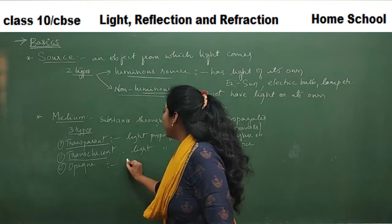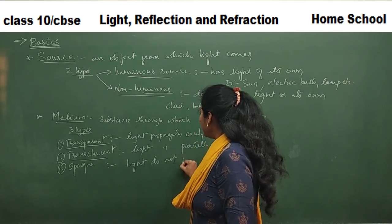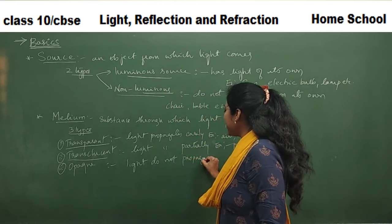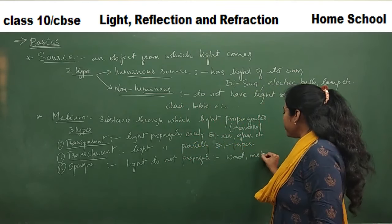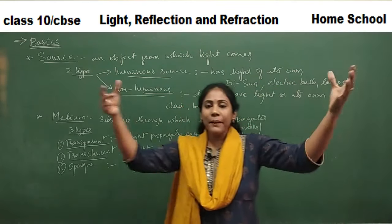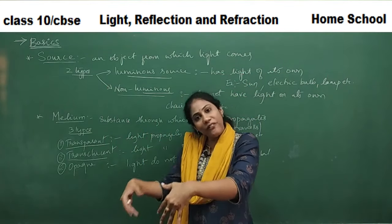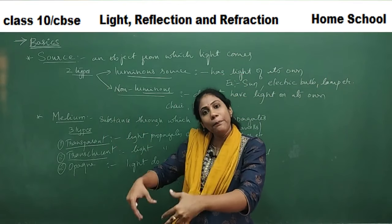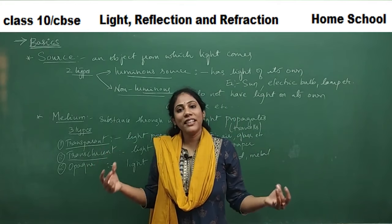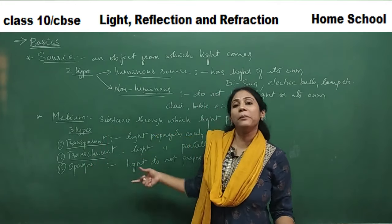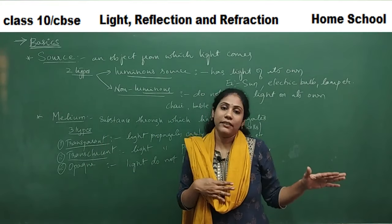The third type is opaque medium, through which light does not propagate at all. For example, wood or metals. If you hold a torch against a thick piece of wood, no light rays will come out the other side. So wood is an opaque medium — a medium through which light rays do not propagate.